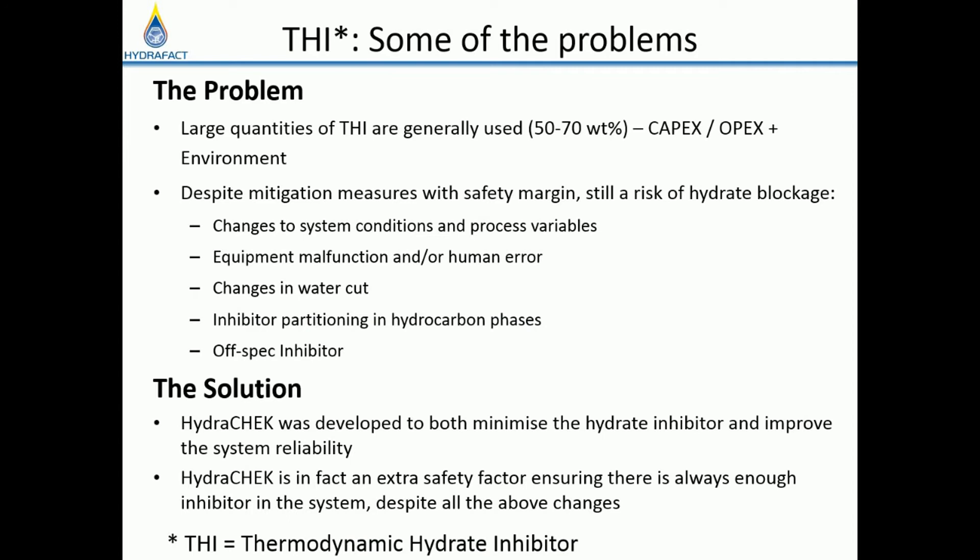In fact, large quantities of inhibitor are used to avoid hydrate problems, resulting in extra capex — such as pumps, storage tanks, piggyback pipelines — and opex — cost of inhibitor, logistics, disposal, environmental damage, and product quality issues. However, despite all these measures of injecting too much inhibitor, there are still numerous cases of hydrate blockage in oil and gas pipelines.